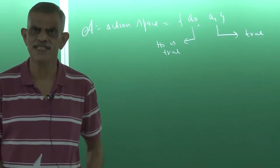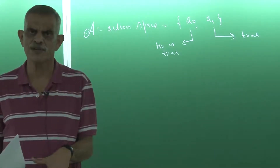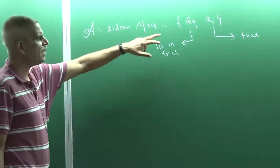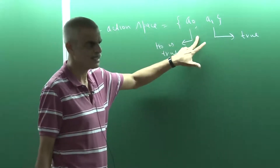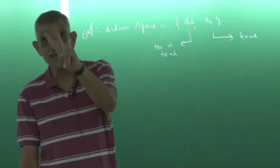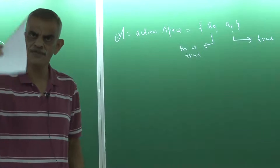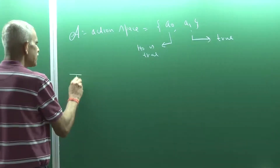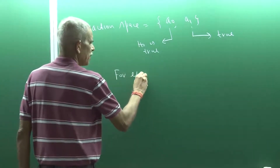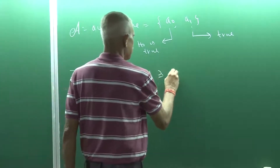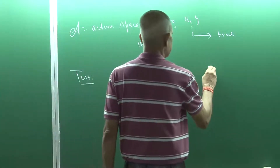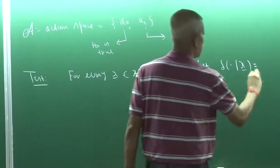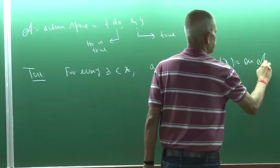Another possibility is a randomized test: after observing x, you do not immediately take an action but perform further randomization. A randomized test is, for every x in the sample space, a probability distribution over the action space A. Since A has only two elements, δ(a₀|x) is the probability of accepting H₀ and δ(a₁|x) is the probability of accepting H₁, with δ(a₁|x) = 1 − δ(a₀|x).